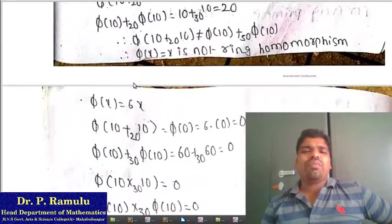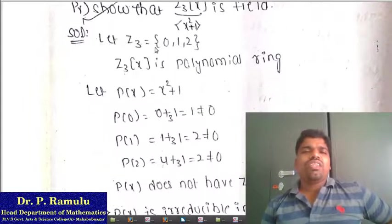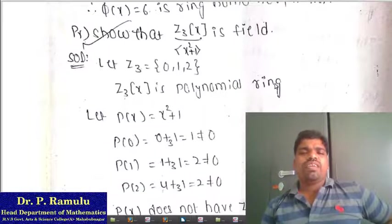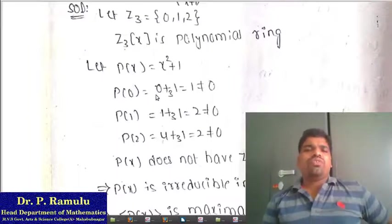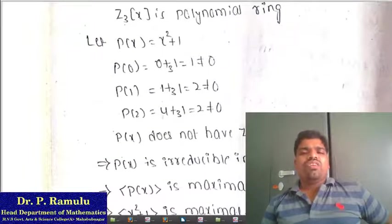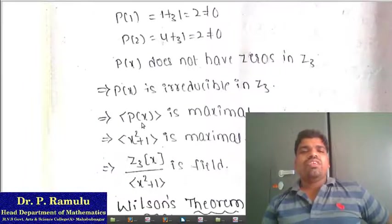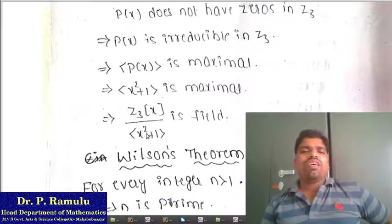Show that Z₃[x]/⟨x² + 1⟩ is a field. Checking: Z₃ = {0, 1, 2}. Substituting p(0) = 0 + 1 = 1 ≠ 0; p(1) = 1 + 1 = 2 ≠ 0; p(2) = 4 + 1 = 5 ≡ 2 (mod 3) ≠ 0. So p(x) = x² + 1 has no zeros in Z₃, therefore p(x) is irreducible in Z₃[x]. Since p(x) is irreducible, ⟨p(x)⟩ is a maximal ideal, which implies Z₃[x]/⟨x² + 1⟩ is a field.